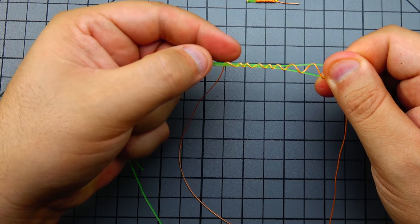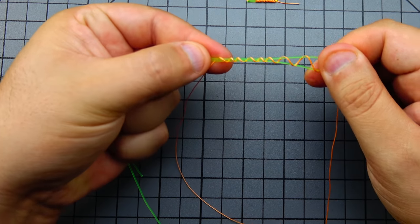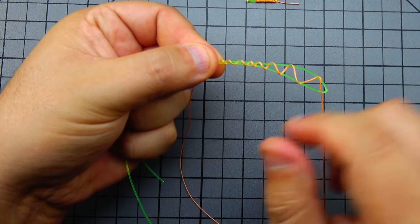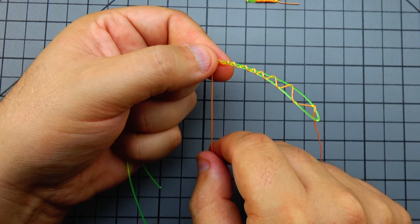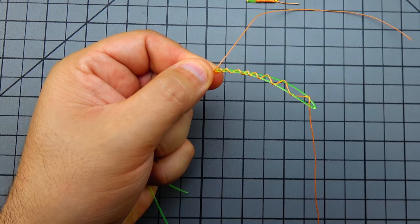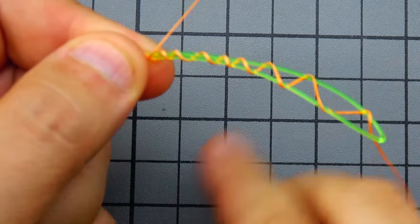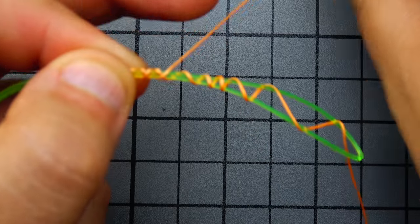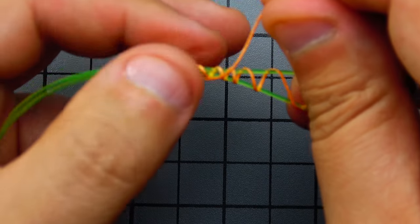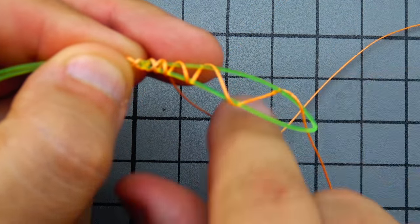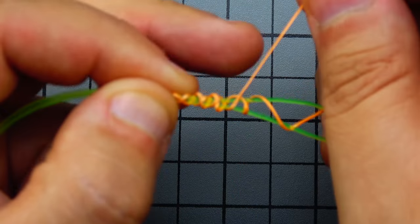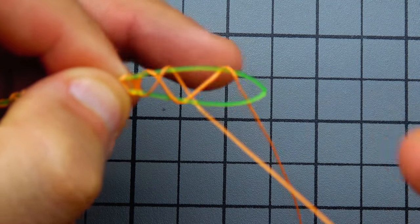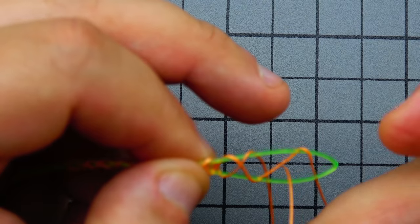Once you get those turns and those wraps, take the pointer finger and you're going to kind of pinch the braid, the two legs of the mono, together like that. And you're going to lean it back up. And now what you're going to do now is you're going to start wrapping back up with that braid tag end in between each one of the gaps that was created when you made the initial wraps. As you can see, it's very simple. There really isn't much of a learning curve to this knot.